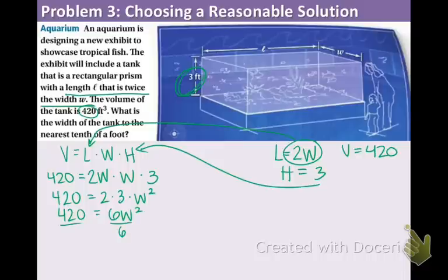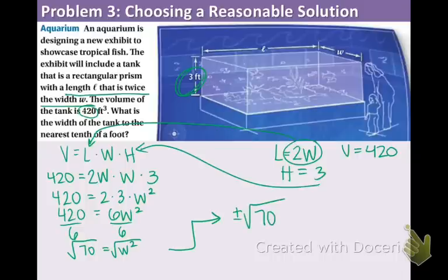We want to get the W by itself, so divide both sides by 6, and that means we get 70 equals W squared. We must take the square root of both sides. So that means, plus or minus square root of 70 equals W.